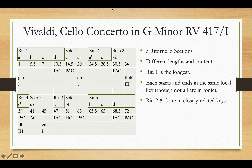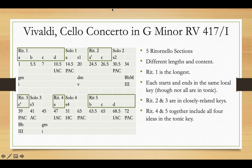Ritornellos 2 and 3 are in closely related keys: number 2 is in D minor (the minor dominant) and number 3 is in B-flat major (the major mediant). Interestingly, if you take ritornellos 4 and 5 together they include all four ideas, so the ideas introduced in ritornello 1 in G minor at the beginning do come back in G minor at the end. The only difference is that between idea A and idea B there is an interpolated solo section, and ritornello 4 ends with a half cadence as a result.